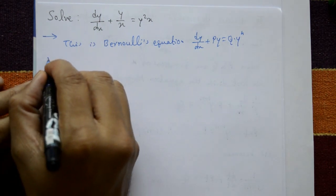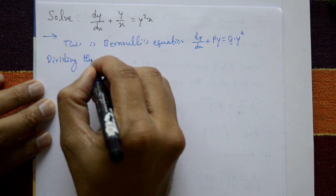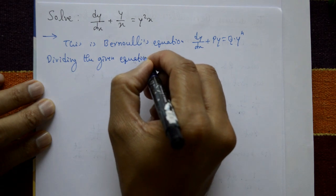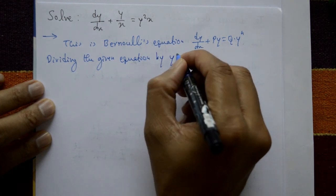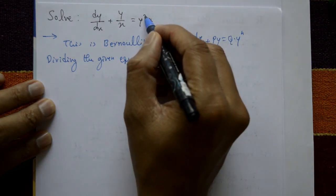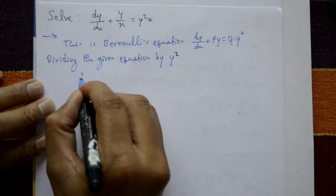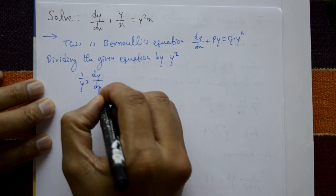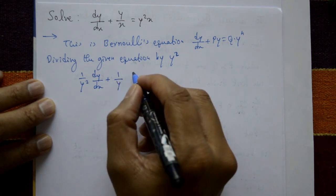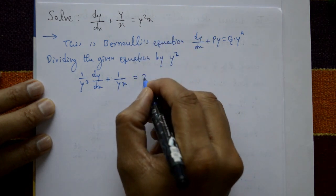Now dividing the given equation by y², because y² is there — Q·y^n means y squared — divide the whole equation by y². So (1/y²)·dy/dx + (1/y)·(1/x) = 1/x.